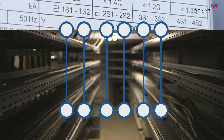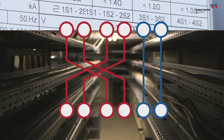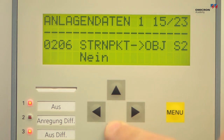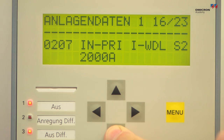The secondary wires from two of the instrument transformers in a three-phase system may have been swapped. The settings in the relay, meter, or control room device may have been set incorrectly.